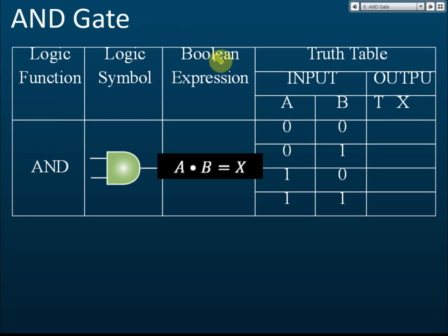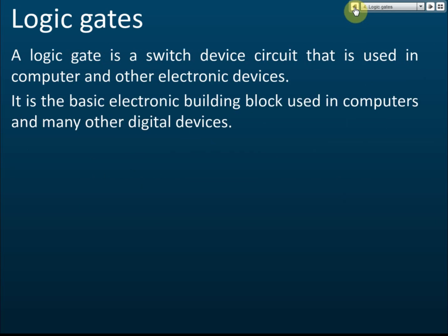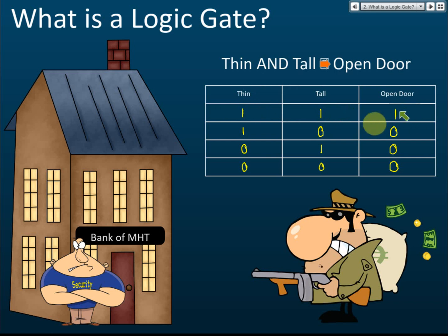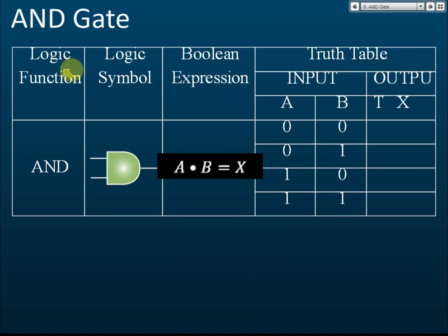The first gate is called the AND gate. We call it the AND gate because its function is totally the same as the logical AND condition — only when both inputs are positive will you get a positive result. If one or both inputs are negative, you get a negative result. That's why we call it the AND gate.